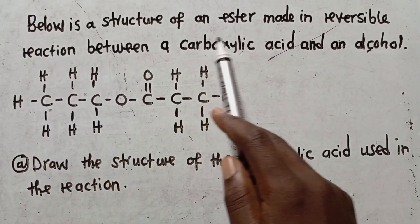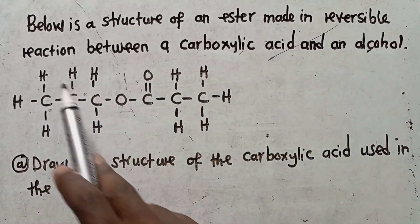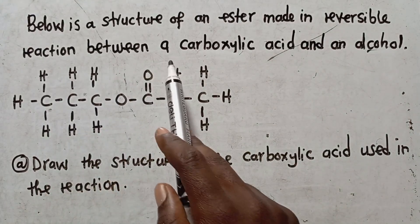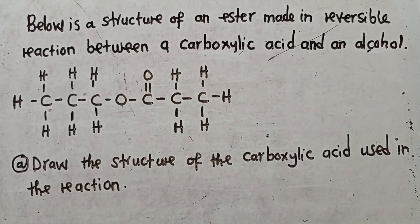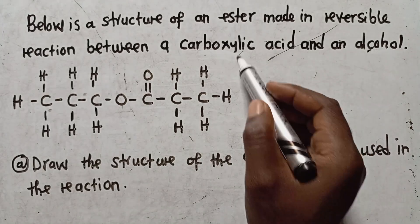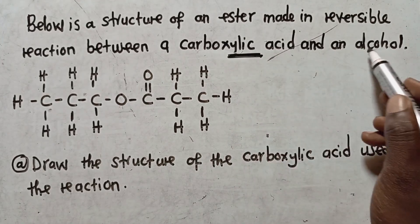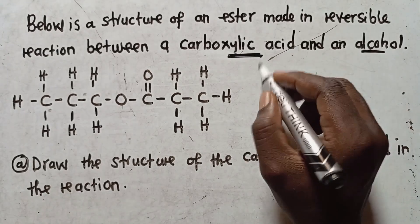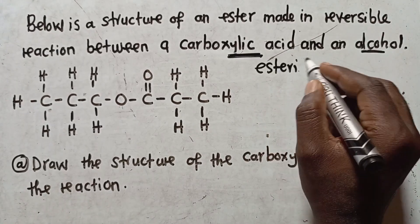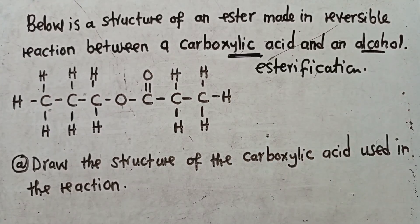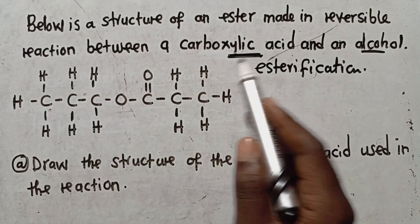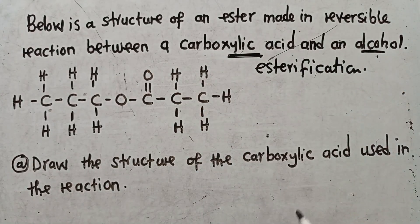An ester is a structure formed from an irreversible reaction between a carboxylic acid and an alcohol. The process by which a carboxylic acid reacts with an alcohol is called esterification. So if a question comes — what do we call the process by which an alcohol reacts with a carboxylic acid? — it is called esterification.